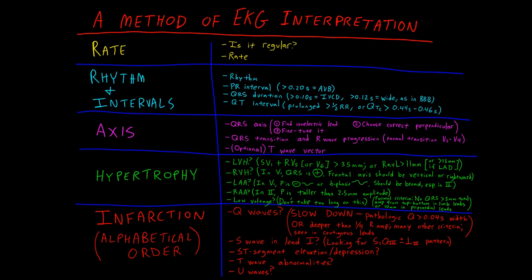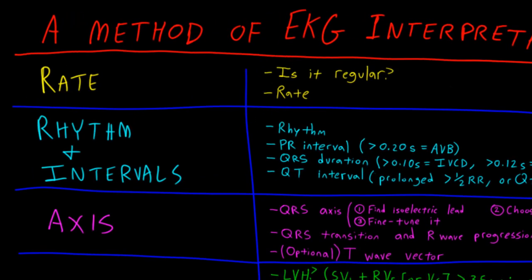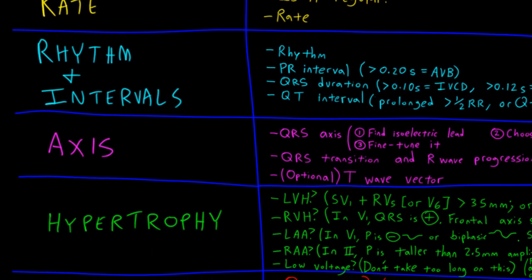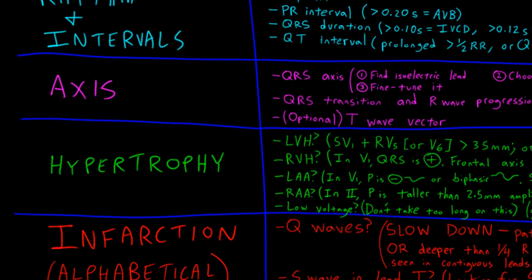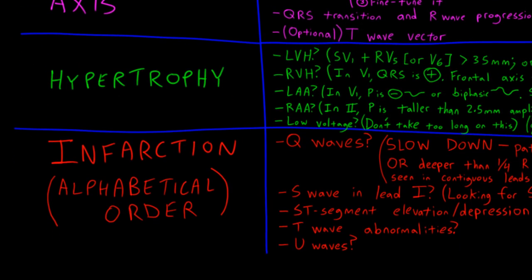This is the algorithm that we've been following with these videos. We've talked about rate, rhythm and intervals, axis and transition, and hypertrophy. And so now we're going to talk about infarction. Though we're calling it infarction, what we're actually doing here is just making sure that we look carefully at each of the remaining waveforms on the EKG to make sure that we can come up with the right diagnosis.